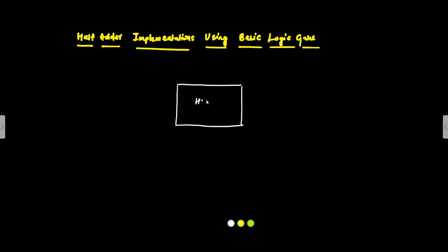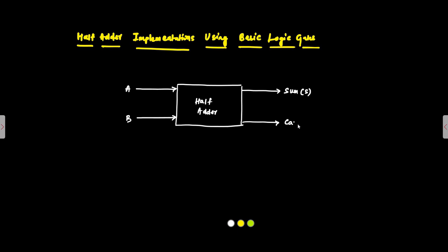First we have to draw the block diagram of the half adder circuit. The half adder has two inputs — the two bits to be added, A and B. One output is the Sum and the other is the Carry output, represented as C-out. The Sum is represented as A'B + AB', and the Carry output is simply A AND B.